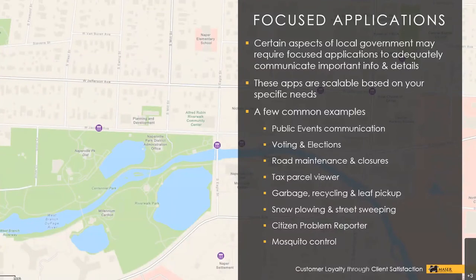There are many different types of focused applications that share important information for specific events or services within local government. A few examples include public events, voting locations and election districts, road maintenance and enclosures, DPW activities such as recycling and snow plowing, a citizen problem reporter allowing citizens to report issues around town, and mosquito control for alerting residents of spraying operations.